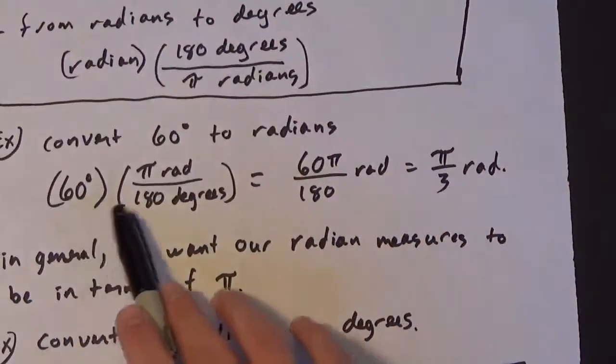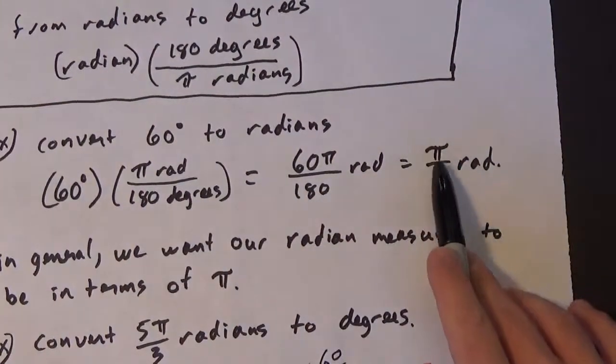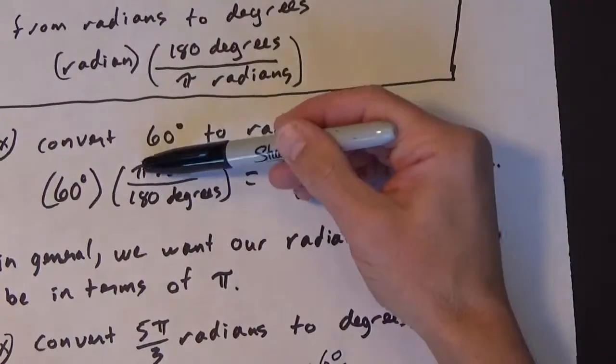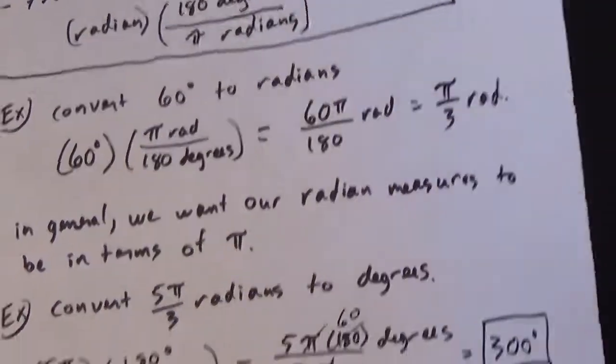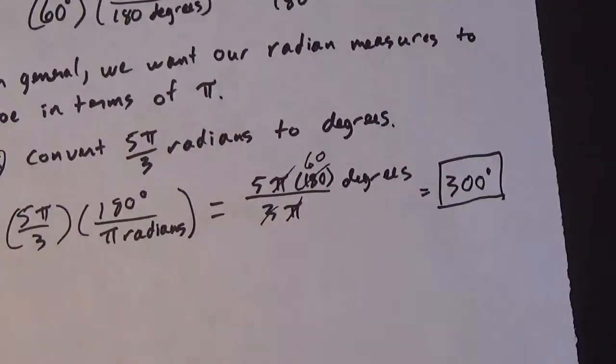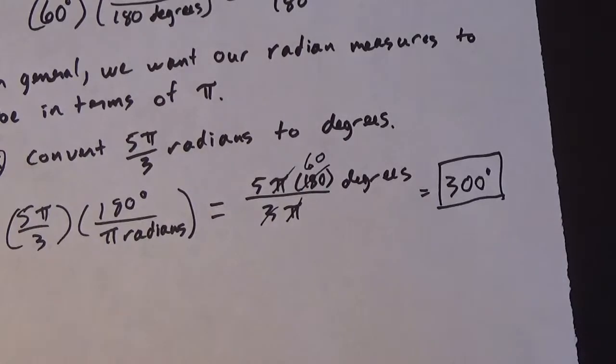And then to go from degrees to radians, we always want to bring the pi back in. And so I remember that the pi needs to be in the numerator in that case. So that's just kind of a way that I remember which conversion goes with which because it can get confusing to think, wait, is it pi over 180 or 180 over pi? Which one do I use? So that's how I remember.